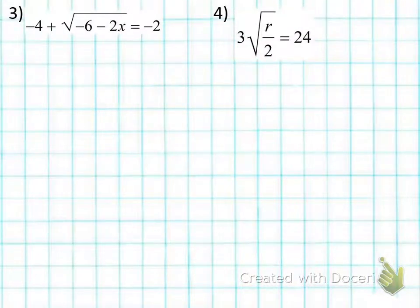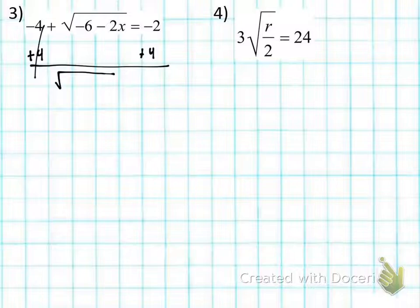Okay, so on number 3, we know that step 1 is isolate the radical sign, or a radical sign. Is the radical sign here isolated, everyone, on number 3? Is this isolated by itself? No. No, it's not. So what's next to it that needs to move away? Add 4 to the other side. Add 4. So that's totally fine. Let's add 4 to both sides. And when we do that, we can isolate the radical sign. So we have radical negative 6 minus 2x is equal to positive 2. Now it's isolated.